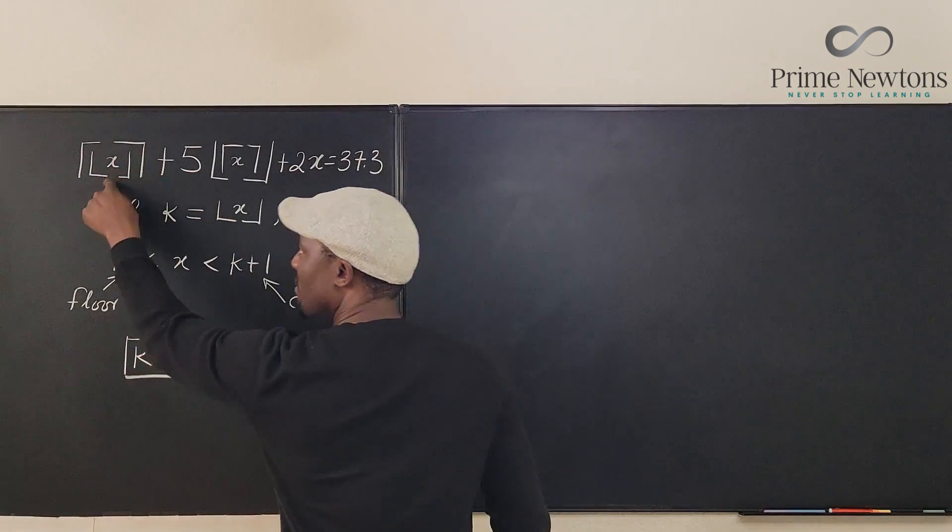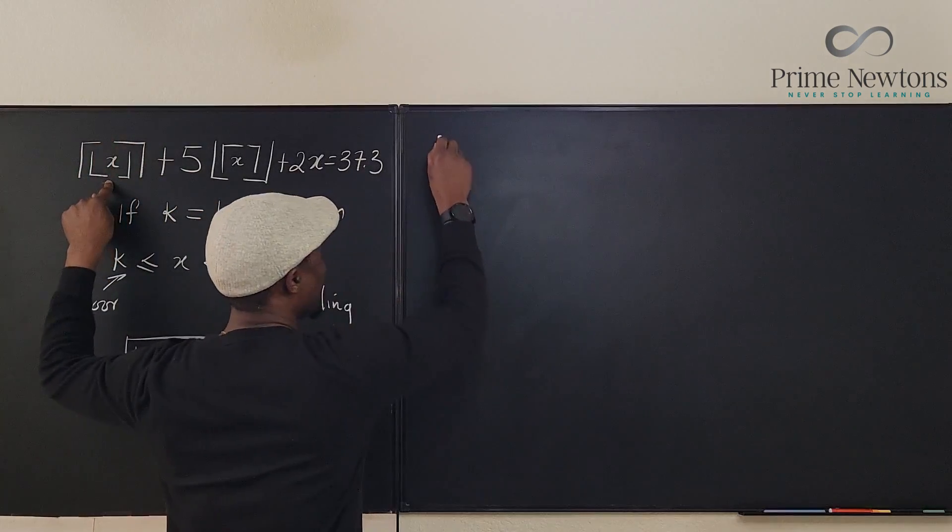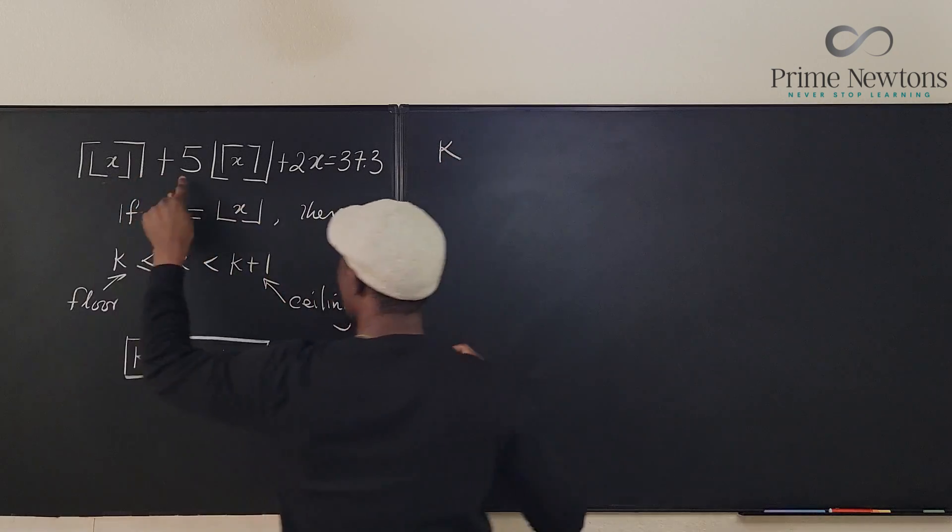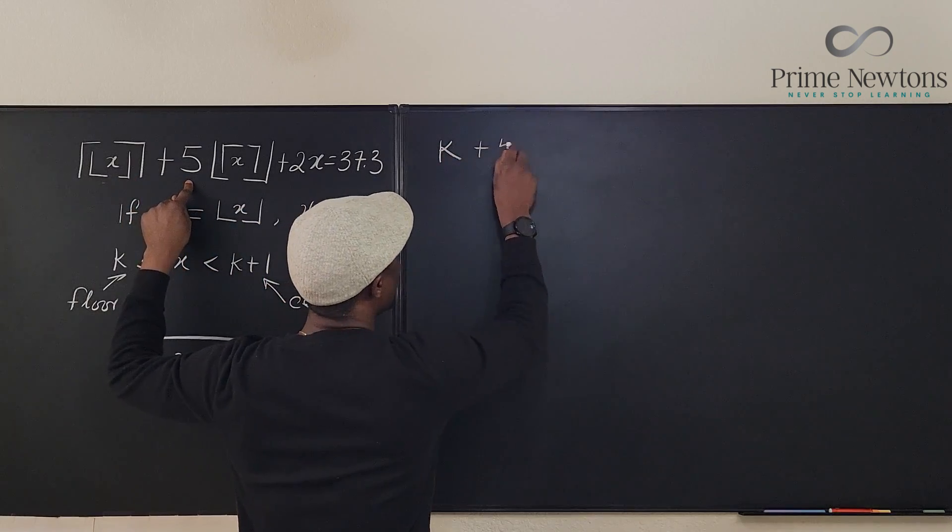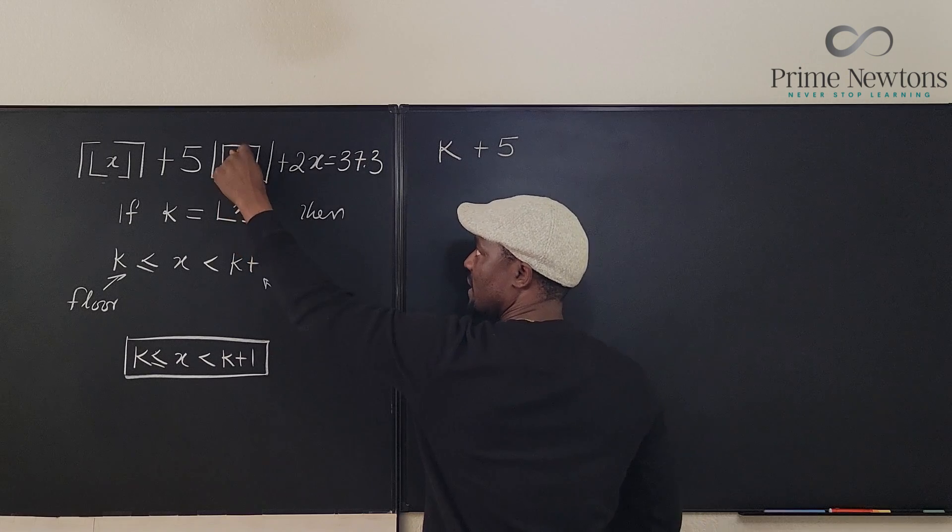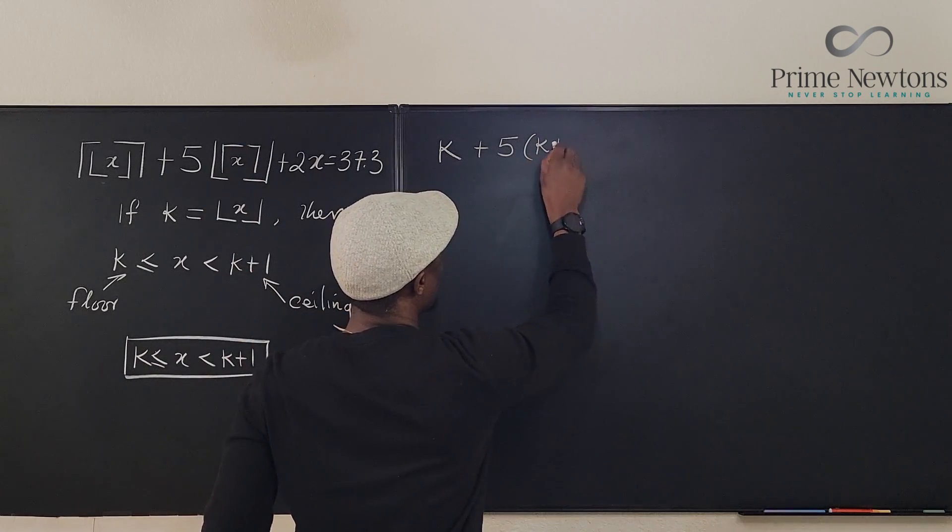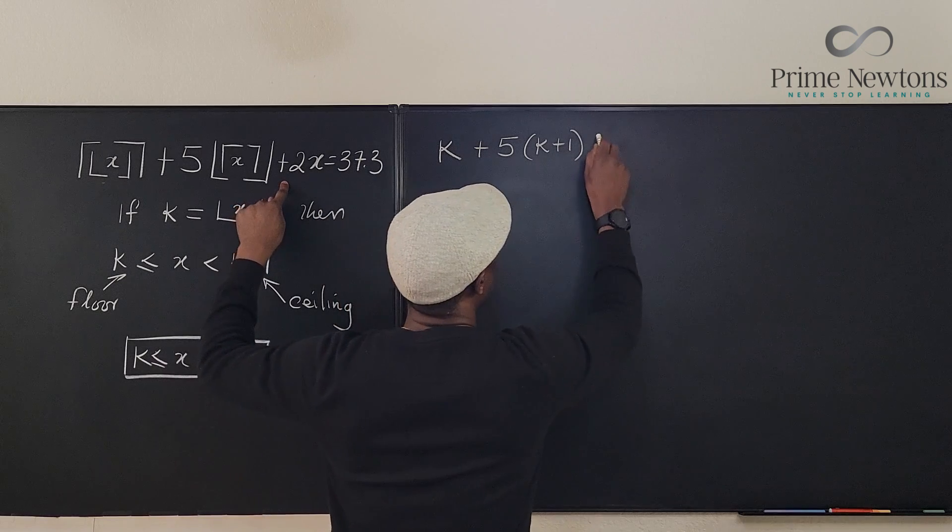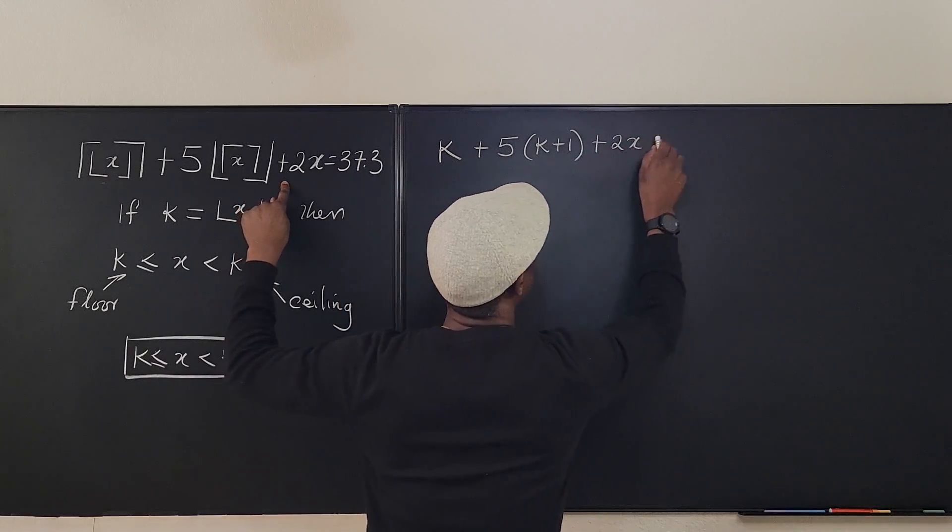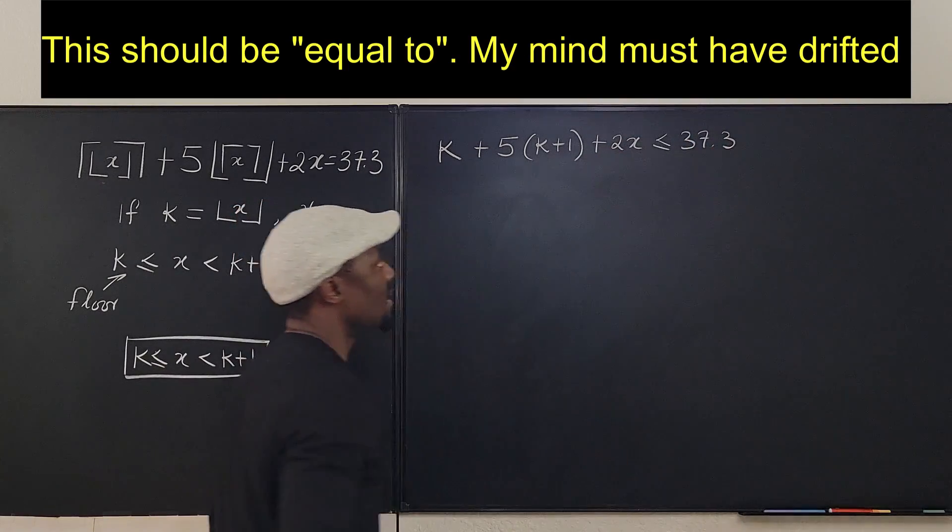Now what really do we need? Let's go back to the original equation. We know that the ceiling of a floor is the floor, so that's k. We go here, we have plus 5 times the floor of the ceiling is the ceiling, what's the ceiling? It is k plus 1. Then we have plus 2x equals 37.3.